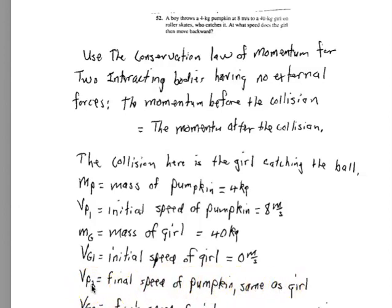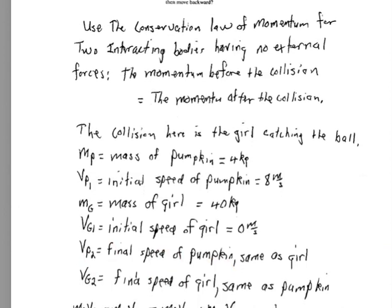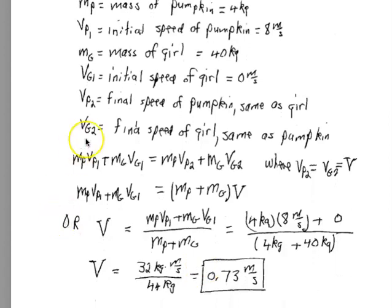And now the final speed of the pumpkin, which is the same as the girl finally, 2 represents finally. So the speed of the girl finally, the speed of the pumpkin finally, they are going to be the same. The speed of the pumpkin finally, speed of the girl finally equal to V because she catches the pumpkin. And she and the pumpkin move together in a coupled collision.